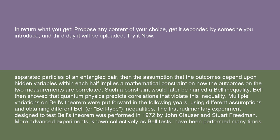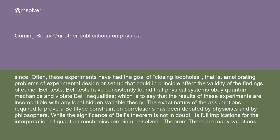Multiple variations on Bell's theorem were put forward in the following years, using different assumptions and obtaining different Bell, or Bell-type, inequalities. The first rudimentary experiment designed to test Bell's theorem was performed in 1972 by John Clauser and Stuart Friedman. More advanced experiments, known collectively as Bell tests, have been performed many times since, often with the goal of closing loopholes — ameliorating problems of experimental design or setup that could in principle affect the validity of the findings of earlier Bell tests.